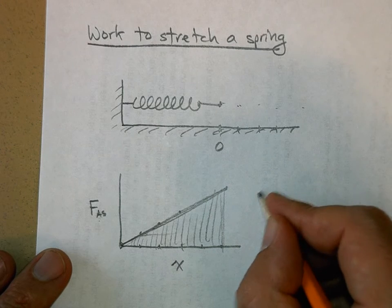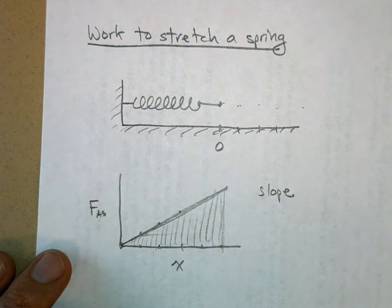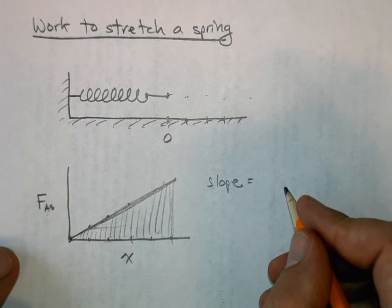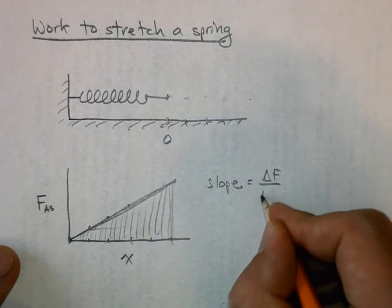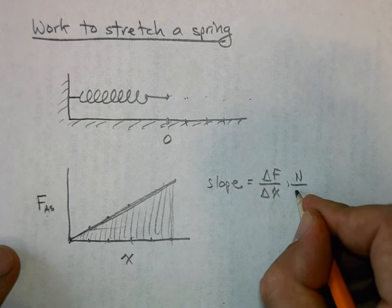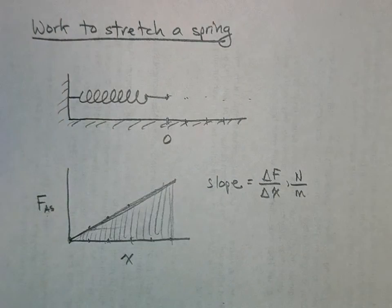The slope here is the rise over the run, so that's going to be a change in force over a change in position. That's going to have units of newtons per meter. And what it is, it's a measure of how stiff the spring is - it's how much force I need to stretch the spring one meter.